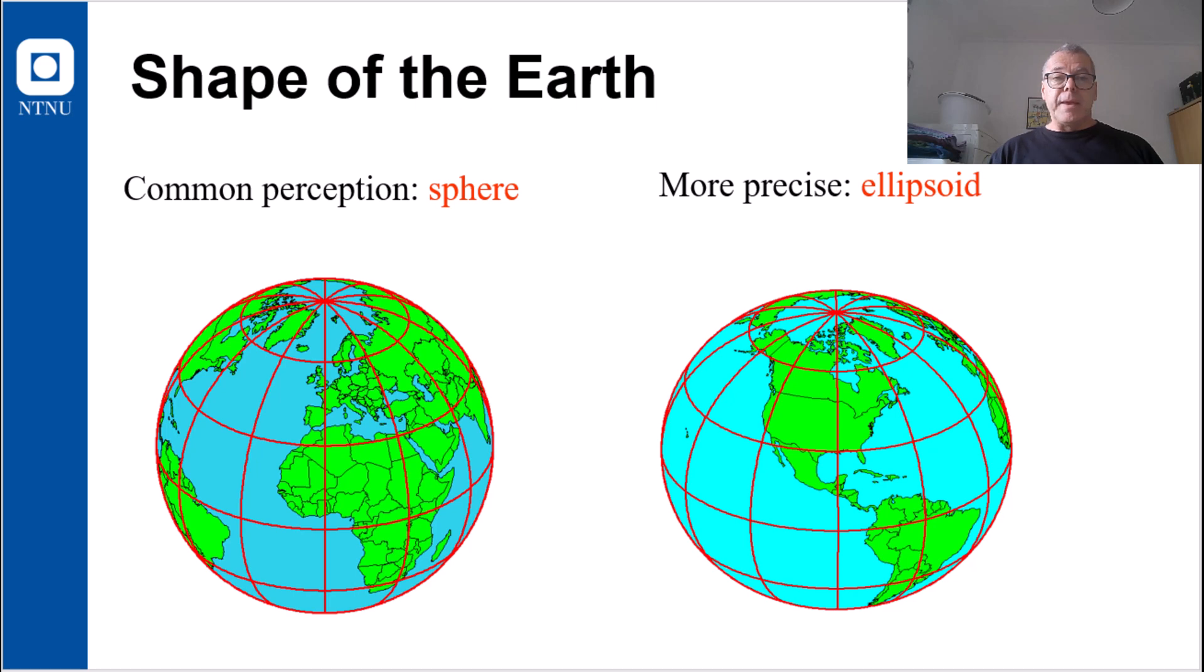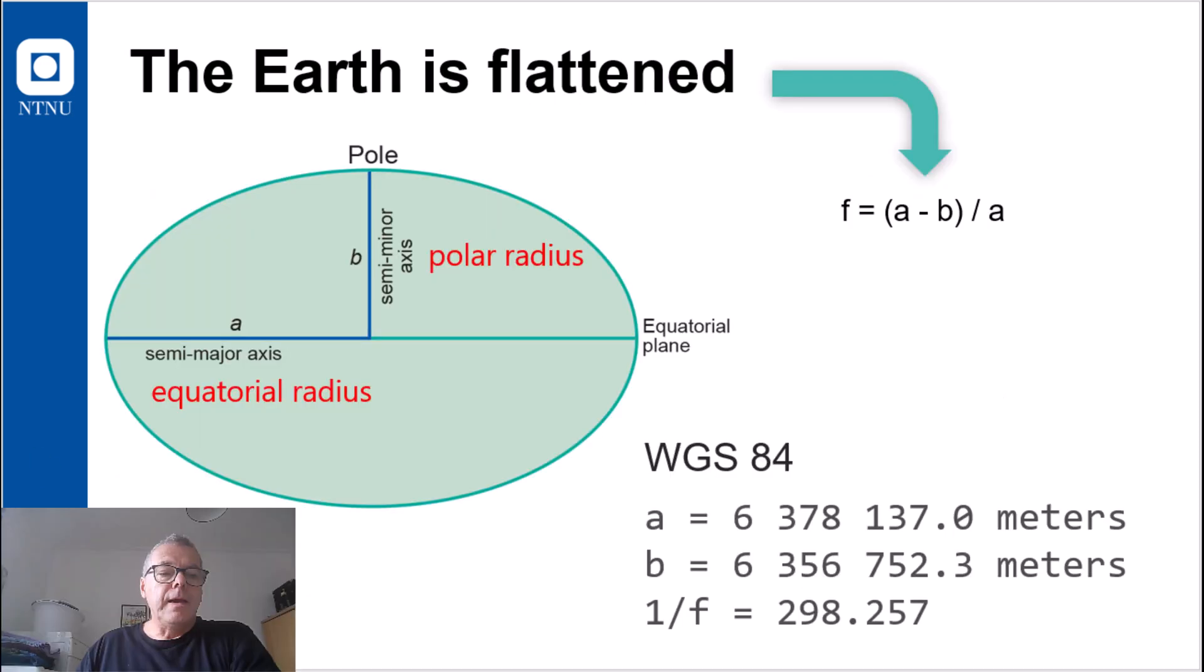A little bit more about the shape of the earth. A very common perception is that the earth is like a sphere. It is however more precise to say that the shape is like an ellipsoid, because the earth is a little bit flattened. An ellipsoid is characterized with its semi-major axis, or the equatorial radius, denoted A, and its semi-minor axis, or the polar radius, denoted B.